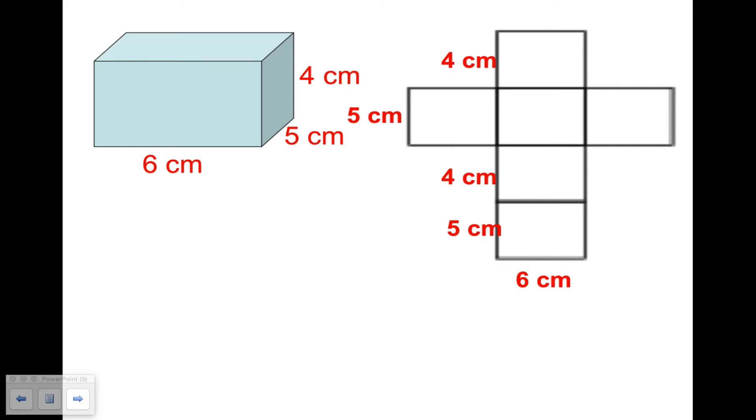So let's find the area of the individual boxes. Starting at the bottom here, we have 5 centimeters by 6 centimeters, so that would have an area of 30 square centimeters. And above that, it's 4 centimeters by 6 centimeters, so that would be 24. And then again, 5 by 6 is 30, 4 by 6 is 24.